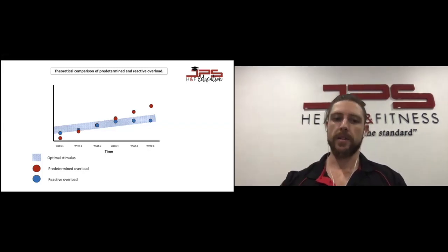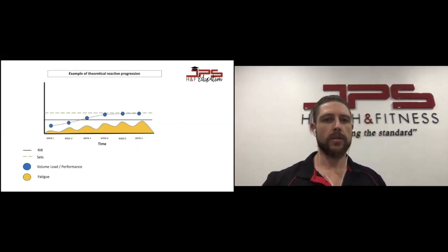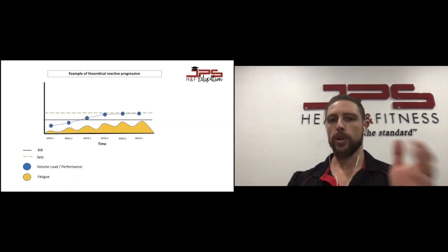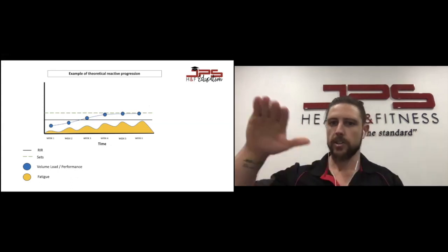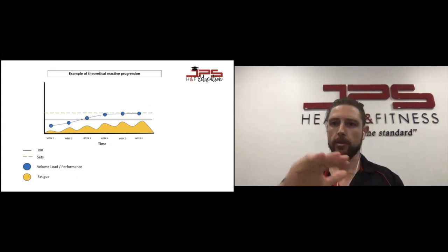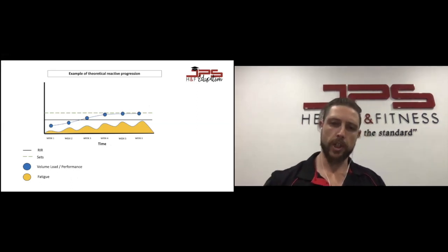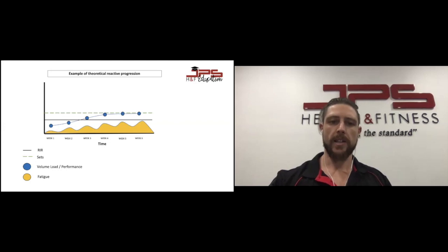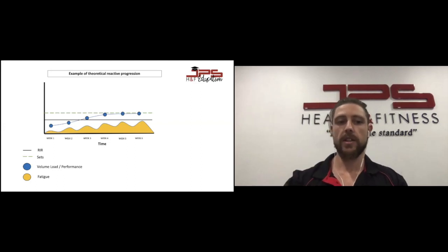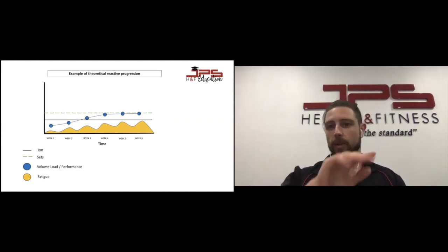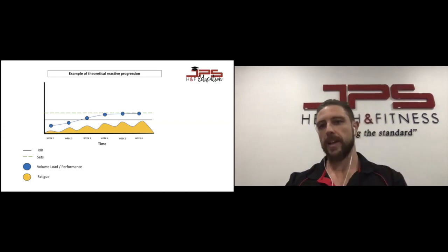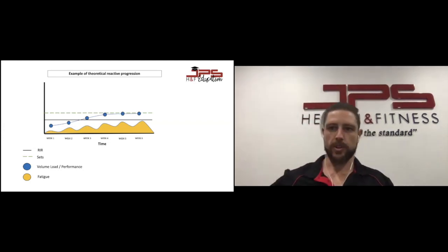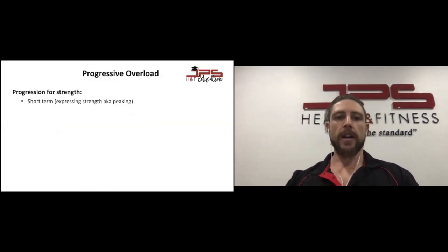This is an example of how we would apply reactive progression — volume load and performance potentially increase over the course of the training cycle. Fatigue gets a little higher over the mesocycle, especially for hypertrophy programs, and we need to adjust the stimulus based on the individual's fatigue level. The yellow line shows fatigue rising, causing performance to flatline. If we keep increasing the stimulus, the individual will reach overtraining, fatigue will be too high, and performance will plummet.